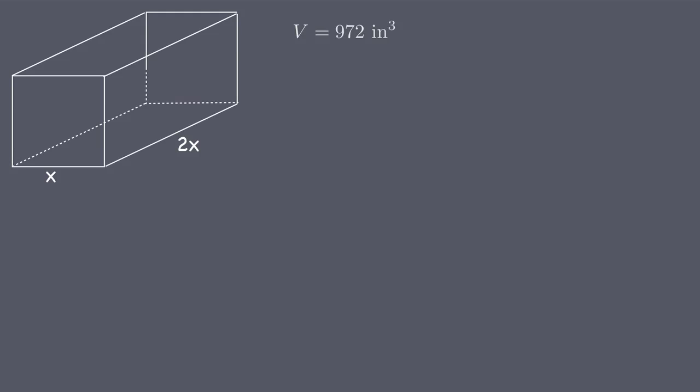Since we've been asked to find the dimensions that minimize surface area, we know that the equation we're going to optimize will be an equation for the surface area of the box. The constraint equation will be an equation involving the volume of the box and its dimensions, since those are the constraints within which we've been asked to work. If we call the unknown height h, then we can write the constraint equation as 972 equals 2x times x times h, because we know that the equation for the volume of a box is length times width times height. The optimization equation for the surface area is A equals xh plus xh for the two ends, plus 2xh plus 2xh for the two long sides, plus 2x squared for the bottom.